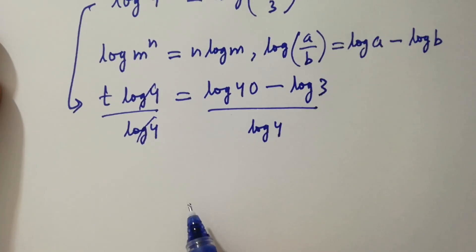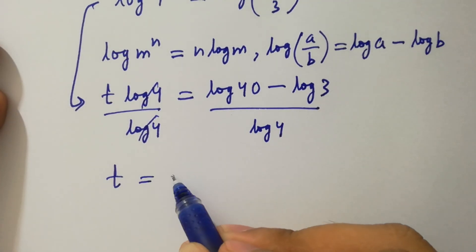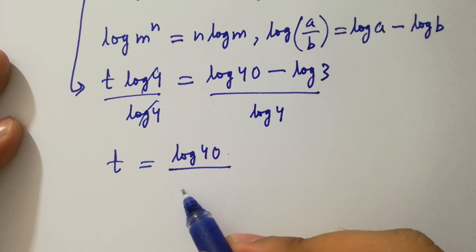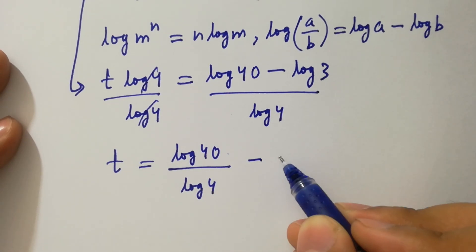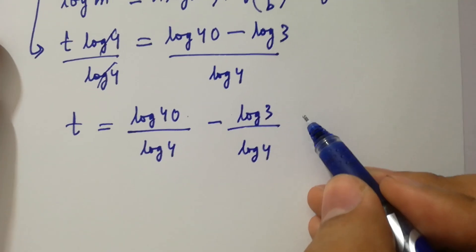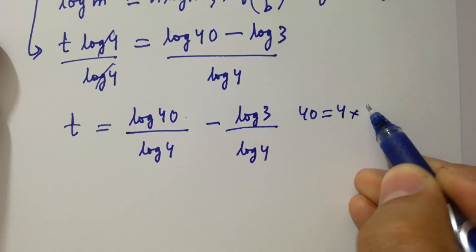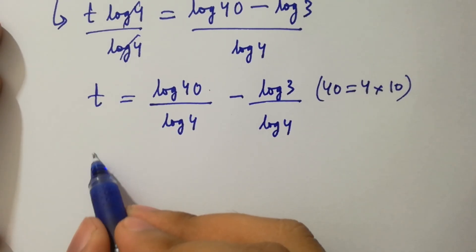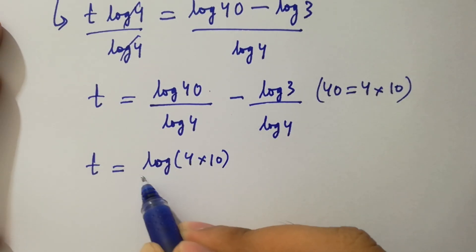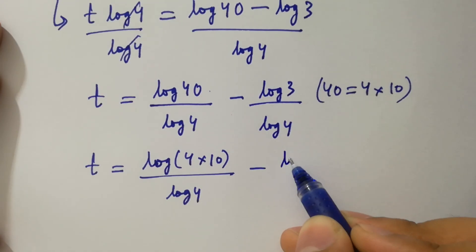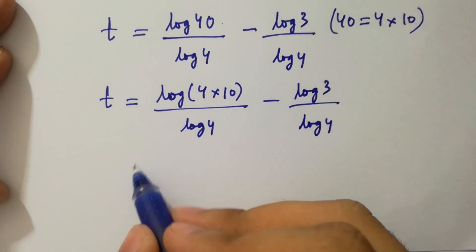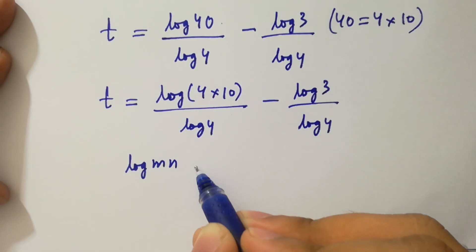Log 4 and log 4 cancel, giving t equal to log 40 over log 4 minus log 3 over log 4. We can separate this into fractions: t equal to log 40 over log 4 minus log 3 over log 4.